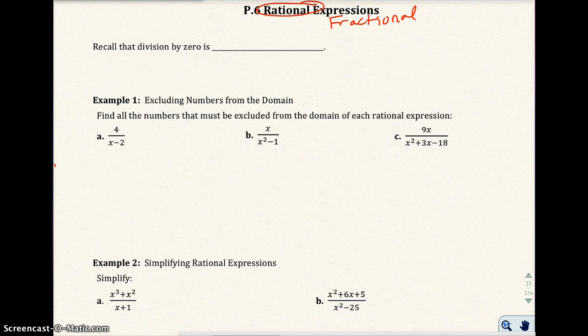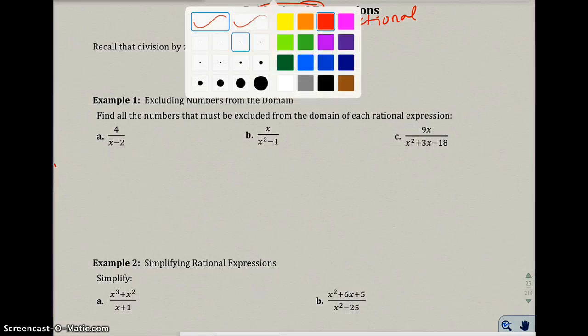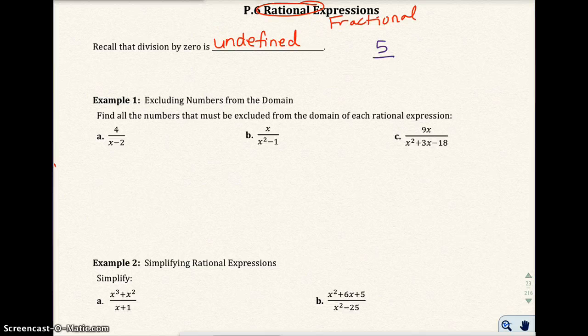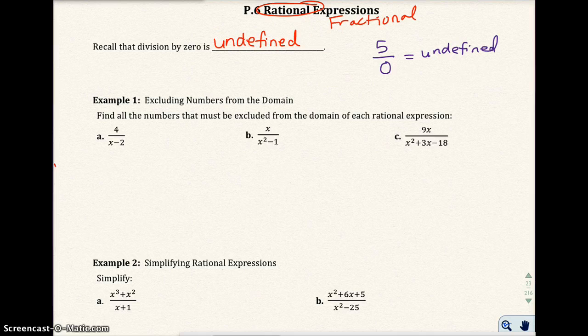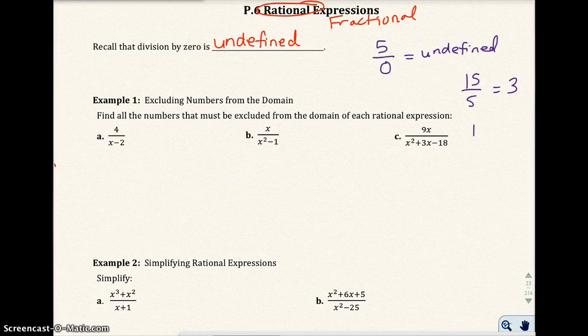So I want you to recall something that you learned back in pre-algebra. Recall that the division by 0 is always undefined. So if you have 5 divided by 0, that's undefined. If I'm doing that with me, how do you know that's undefined? Well, let's go back to a problem that we do know. Let's have 15 divided by 5, that's equal to 3. And 12 divided by 2 is 6. And 0 divided by 9 is 0.